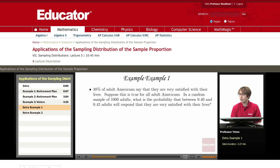Welcome back to educare.com. We're going to look at a few extra examples. Suppose 38% of adult Americans say they are very satisfied with how their lives are right now. Let's suppose this is true for all adult Americans. In a random sample of 1,000 adults, what is the probability that between 0.4 and 0.42 adults will respond that they are very satisfied with their lives?